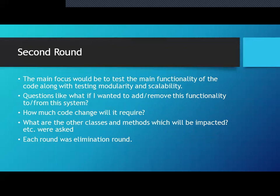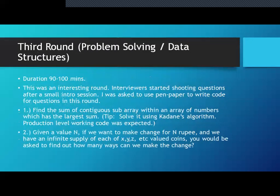Round 3 is problem solving and data structures, lasting 90 to 100 minutes — about one and a half hours. They give you pen and paper for coding questions. One question asked is: find the sum of the contiguous sub-array within an array of numbers that has the largest sum. You can use Kadane's algorithm here, and production-level code is expected.